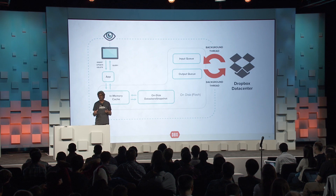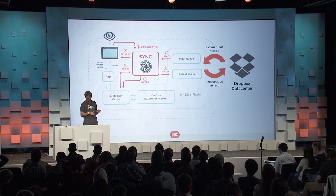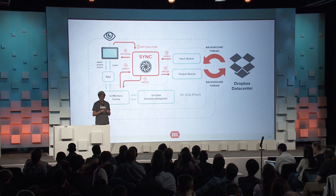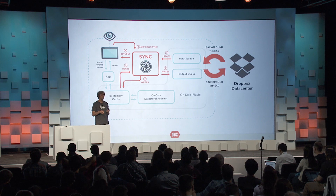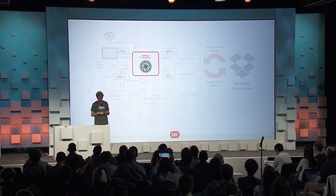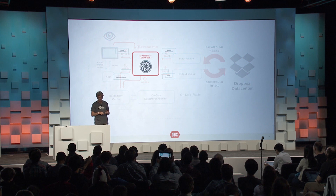When you call sync, a couple of steps happen. First, sync reads the input queue and reads the changes you queued up in memory. It merges them and then writes those changes back both to the local snapshot of the Datastore and to the output queue. This is where the conflict resolution happens.